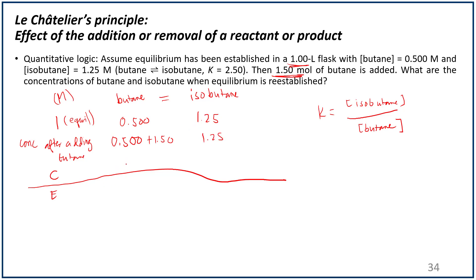The change in butane concentration should be minus X. The change in isobutane concentration should be plus X. It's still minus X because butane is still the reactant, and it's still plus X for isobutane because isobutane is still the product. So here the equilibrium, when equilibrium is reestablished, this will be 2 minus X, and this will be 1.25 plus X. Keeping in mind that this 2 is from this.